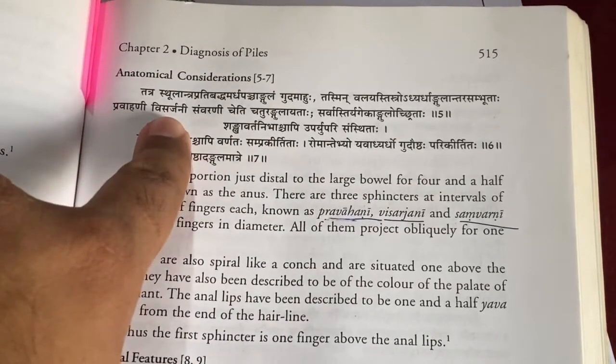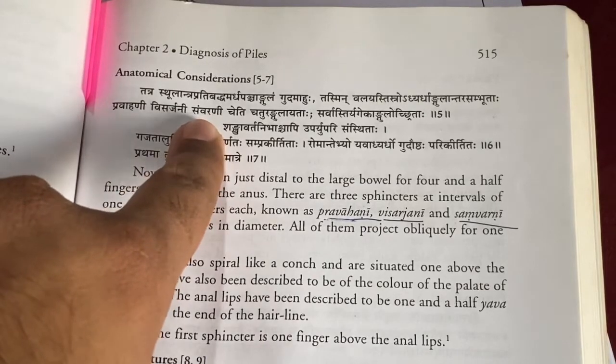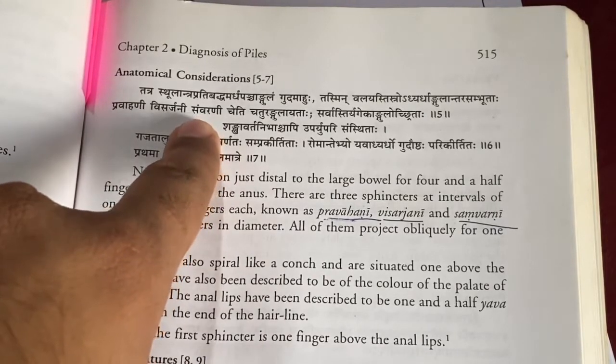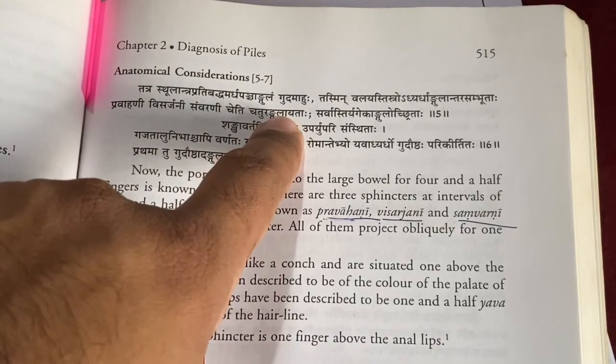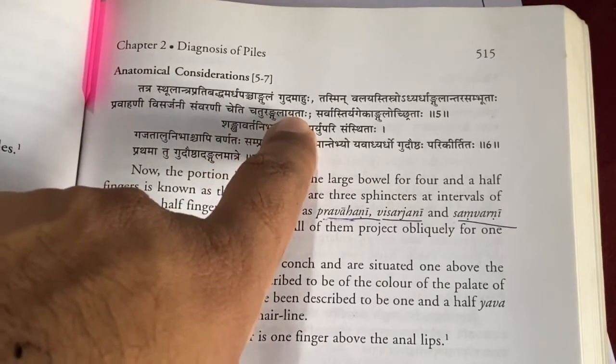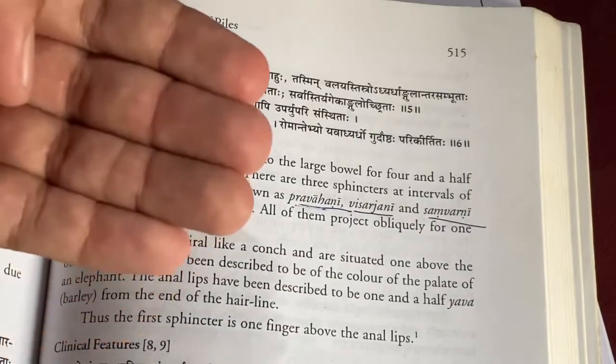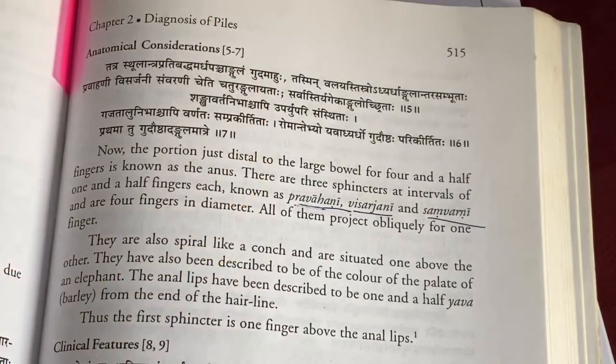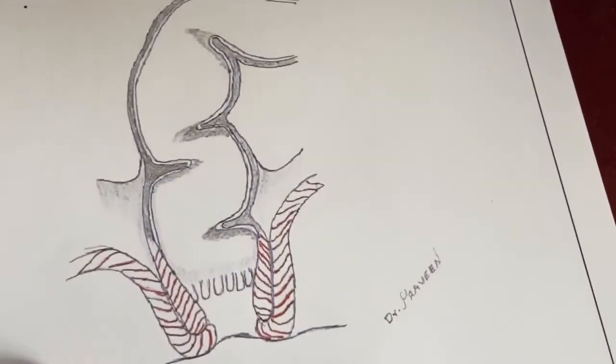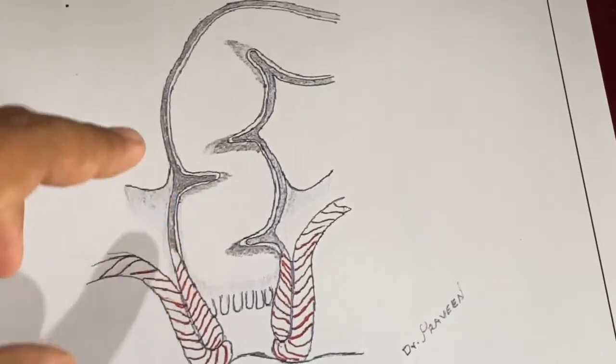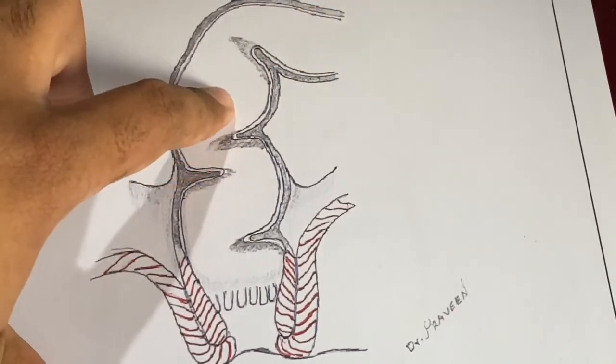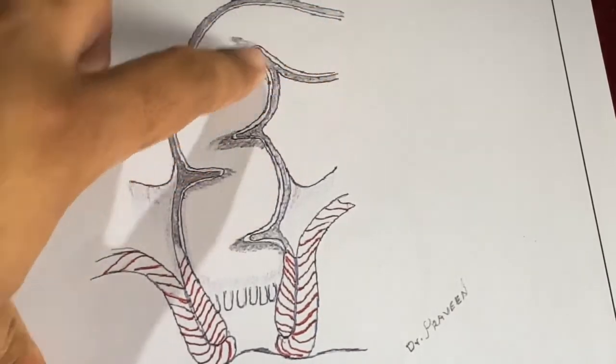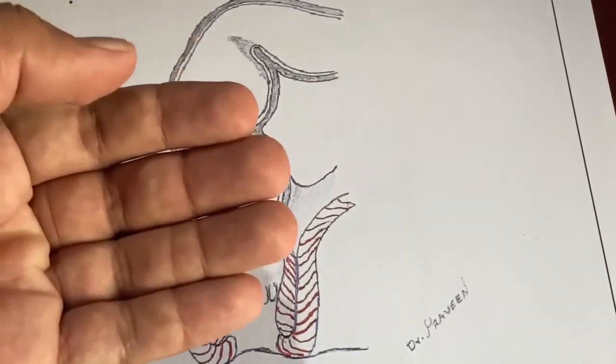What Sushruta says about 5000 years back: in the rectum, the distal part of the brihad antra, that is stula antra—he says stula means large, antra means intestine. So the distal part of the intestine, which is approximately 4.5 inches, the distal part of the intestine is called as gudha.